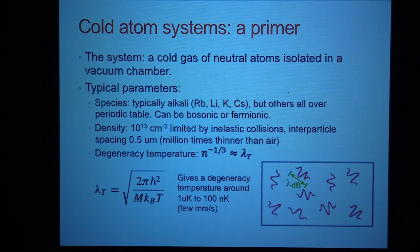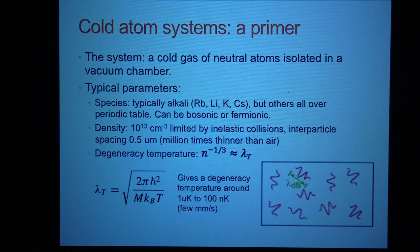So these cold atom systems, what I want you to imagine is a vacuum chamber that has a very dilute gas in it. And the gas typically is an alkali atom, although people have cooled gases all over the periodic table to degeneracy. So things like rubidium, lithium, potassium, or cesium. In my lab here at Princeton, we have lithium. The species can be bosonic or fermionic. So those are composite particles, of course these atoms, so they can be bosons or fermions.